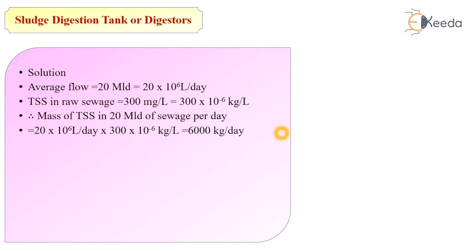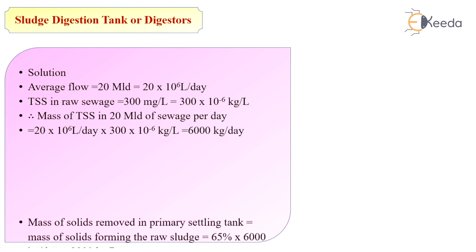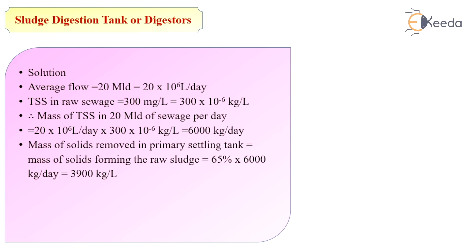The mass of total suspended solids equals 20 × 10⁶ × 300 × 10⁻⁶ kg per liter, which equals 6000 kg per day. The mass of solids removed in the primary settling tank equals 65% of 6000, which equals 3900 kg per day. In primary sedimentation we remove 65% of mass solids, so we multiply 65/100 × 6000 to get 3900 kg per day.